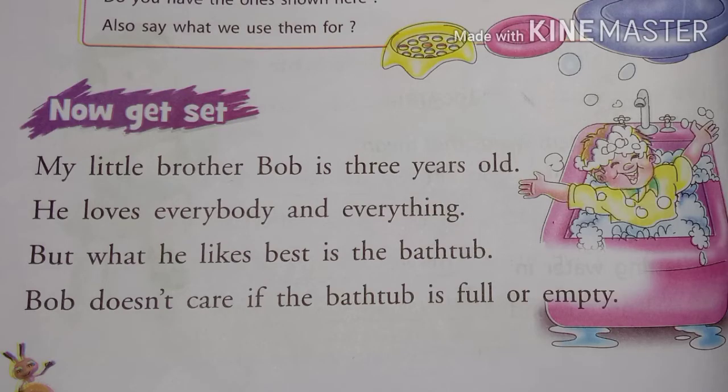Now let's start the chapter. My little brother Bob is three years old. He loves everybody and everything — everybody means every person. But what he likes best is the bathtub. The thing that he likes the most is the bathtub.